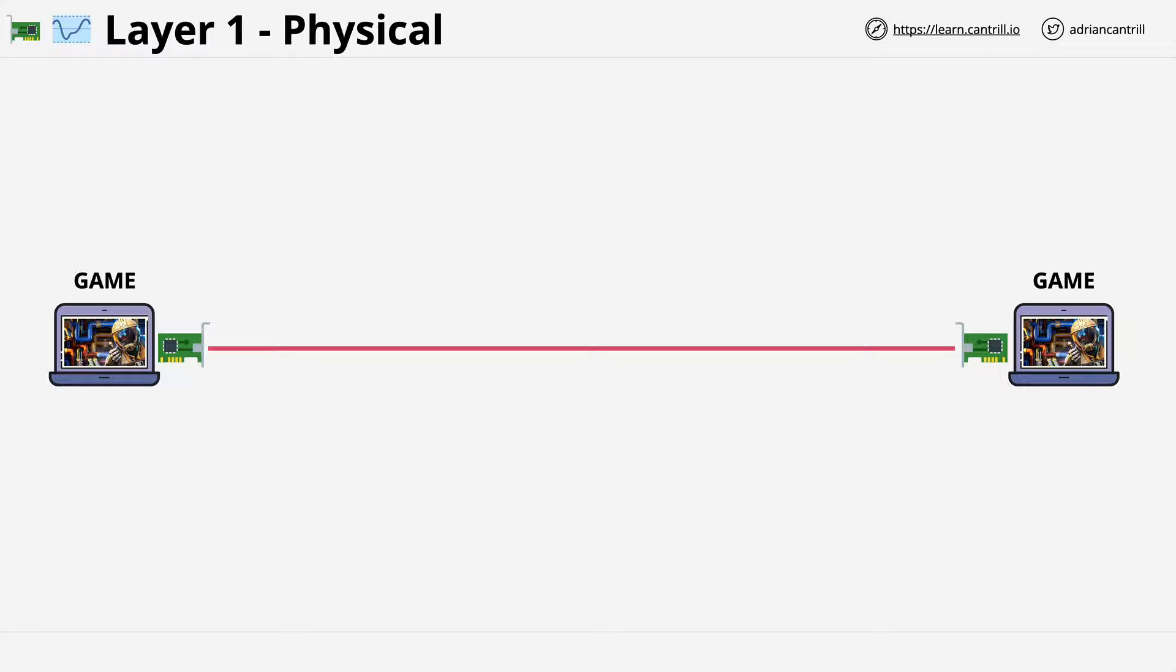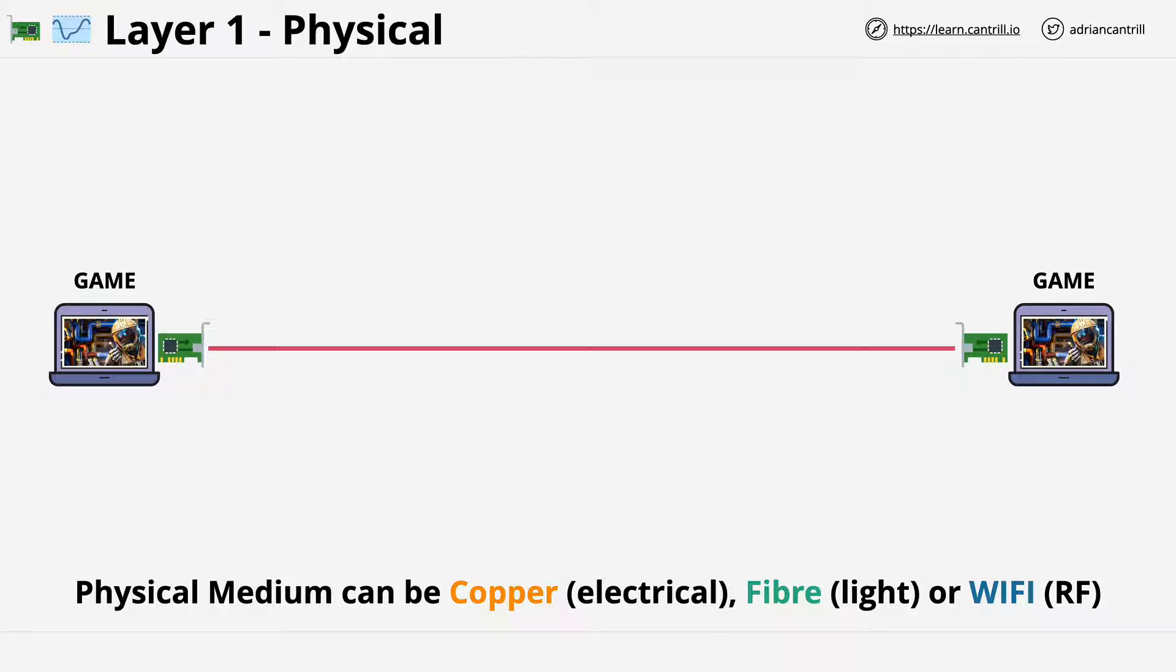Now, physical medium can be copper, in which case it uses electrical signals. It can be fiber, in which case it uses light, or it can be Wi-Fi, in which case it uses radio frequencies.